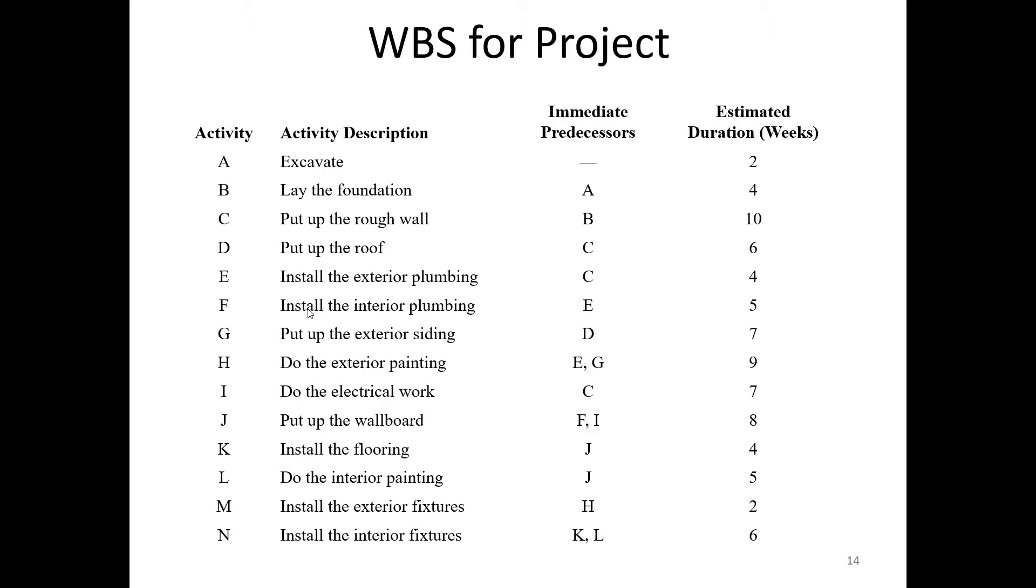We lay the foundation. If we start thinking about building a building, we got to dig something out, right? We lay a foundation in where we dug something out. At the basic level, we put up some rough walls, and then on the sides we put up the roof. We put in the exterior plumbing, install the interior plumbing, basically plumbing to and from the building from the outside, now the plumbing within the inside. Put up the exterior siding, do the exterior painting, do electrical work, put up the wallboard, install the flooring, do the interior painting, install the exterior fixtures, install the interior fixtures.